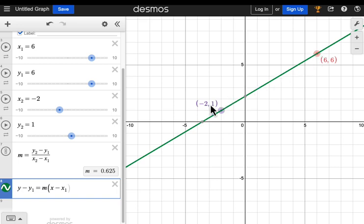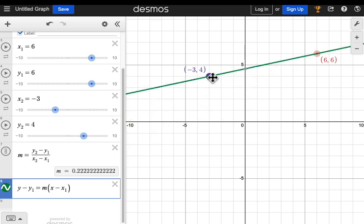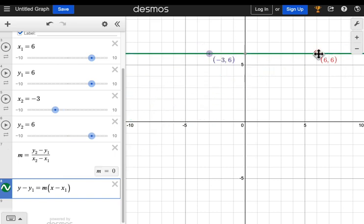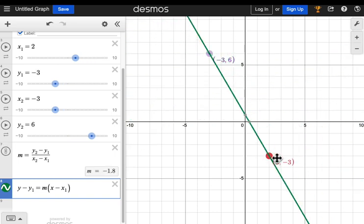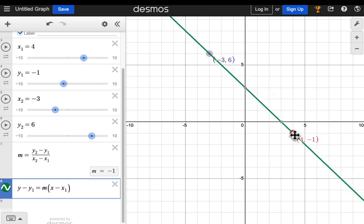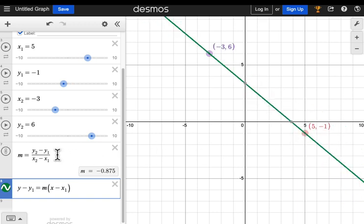See how the line crosses the two points? Move the points around and you'll see that the line continues to pass through the two points. And that's simply because we connected the coordinates of x1 and y1 to the slope. And then this equation picks up the values for y1 and x1 and the slope.